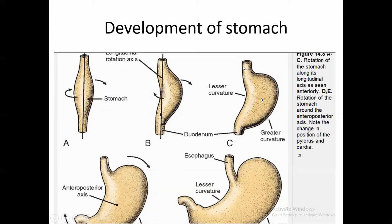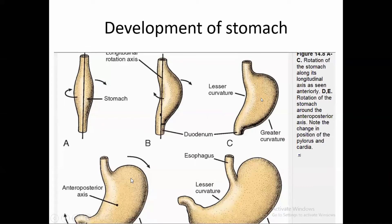After rotation around the longitudinal axis, the stomach still lies in the midline. When the stomach rotates around the anteroposterior axis, the cardiac orifice moves to the left side and the pyloric orifice lies to the right of the median line. Through both the longitudinal and anteroposterior rotations, the stomach reaches its normal anatomical position in the left hypochondrium, epigastrium, and part of the umbilical region.